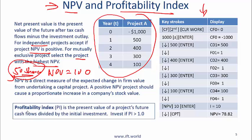Related to NPV is the profitability index, which is simply the present value of a project's future cash flows divided by the initial investment. If the profitability index is greater than 1 then you should go for the project. So having a positive NPV is the same as saying that the profitability index is greater than 1.